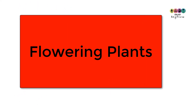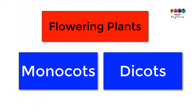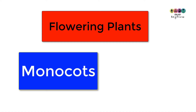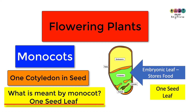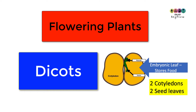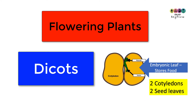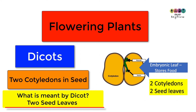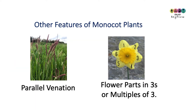Flowering plants are grouped into two groups: monocots and dicots. Monocots have one seed leaf — one cotyledon in the seed — and that seed leaf is there for food storage. Dicots have two seed leaves, also for food storage. Monocots generally have parallel venation and their flower parts are in threes or multiples of threes.